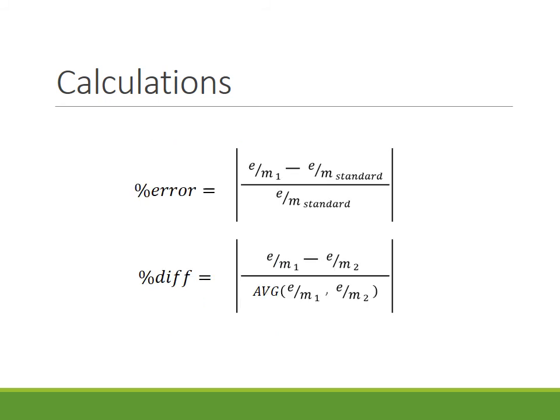So in the table, there is a percent error and a percent difference column. The percent error column relates to the charge to mass ratio one that did not include the Earth's magnetic field as compared to the standard value. So we have the E over M1 minus the standard over the standard converted to a percent in absolute value.